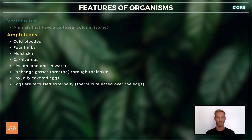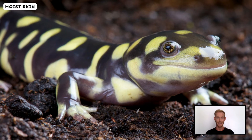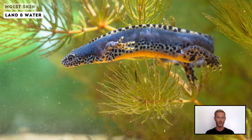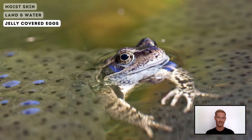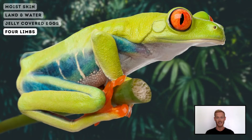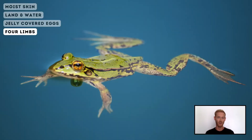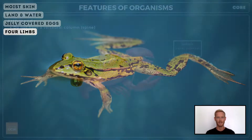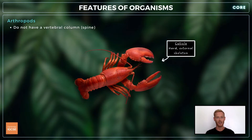Finally, amphibians — including frogs, toads and newts — are cold-blooded vertebrates with moist skin as opposed to scales. They spend time on land and in water, where they lay their jelly-covered eggs. Amphibians have four limbs and their back feet are often webbed to facilitate swimming.